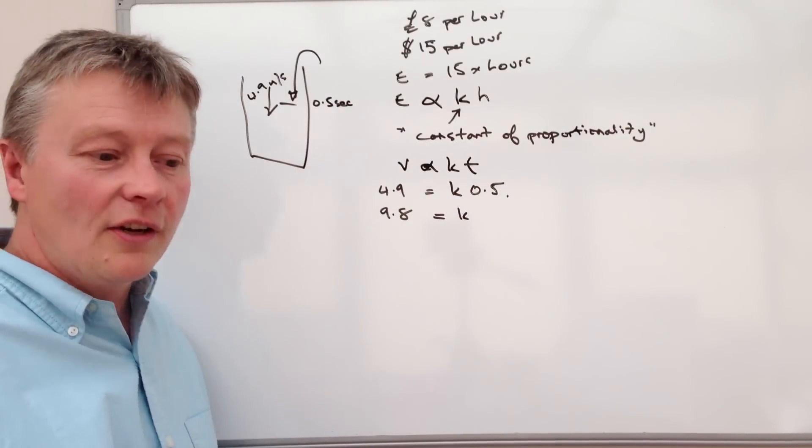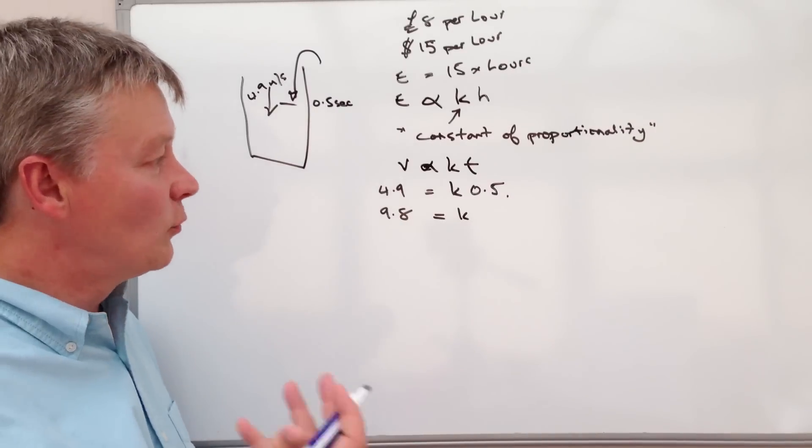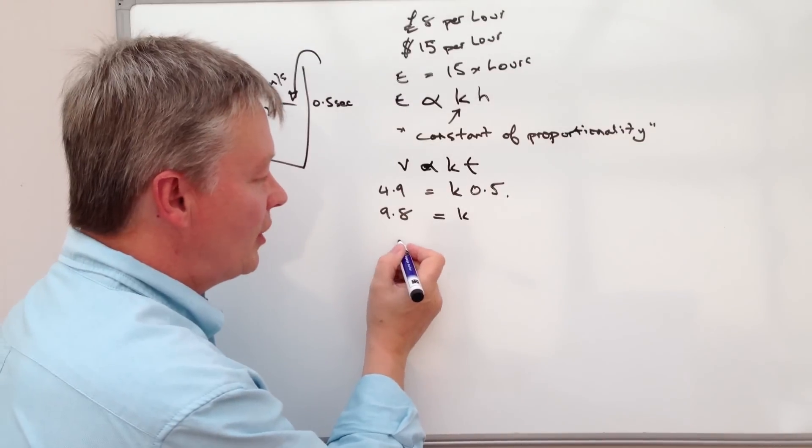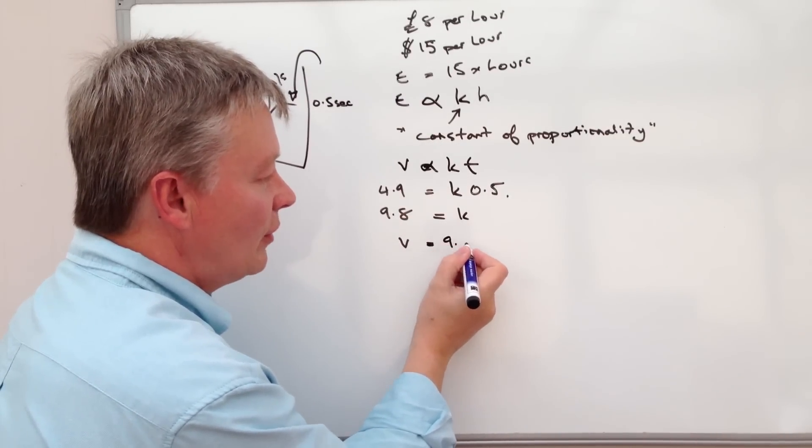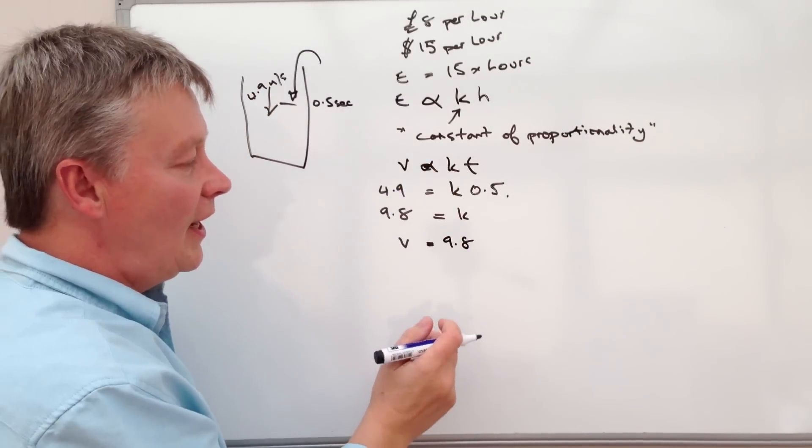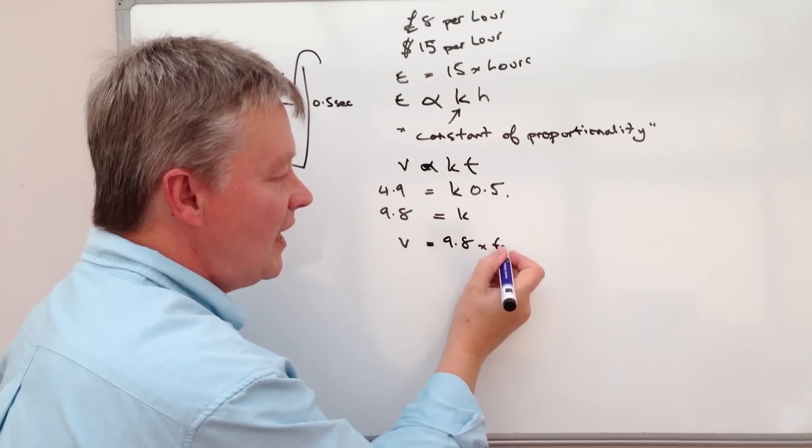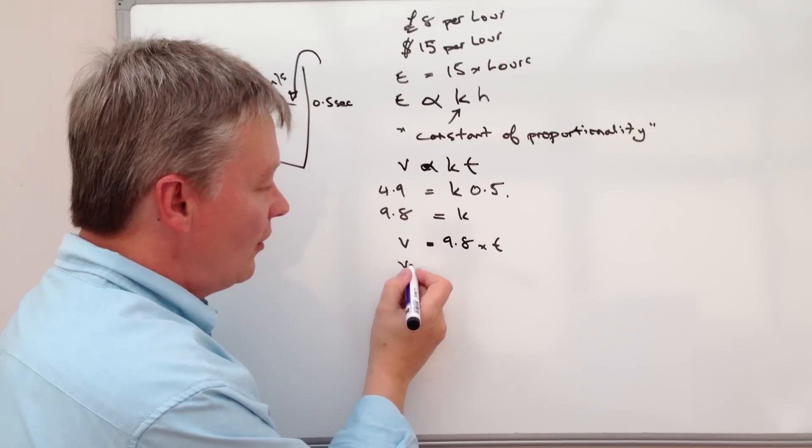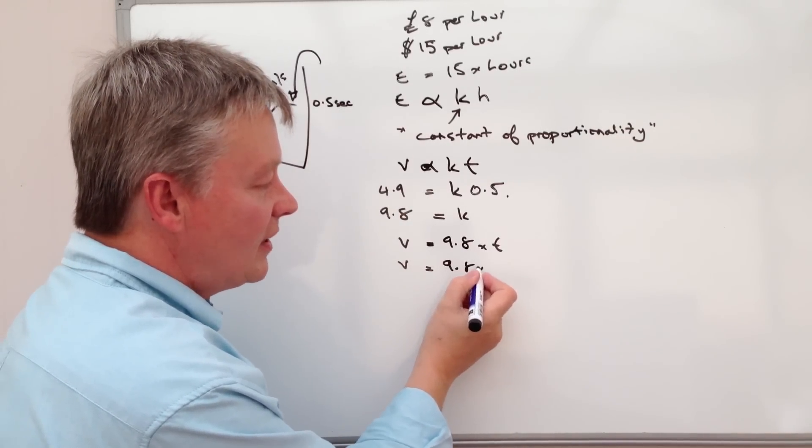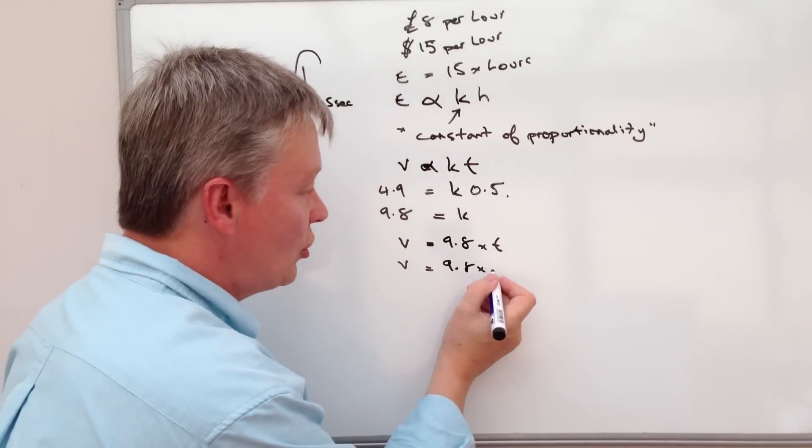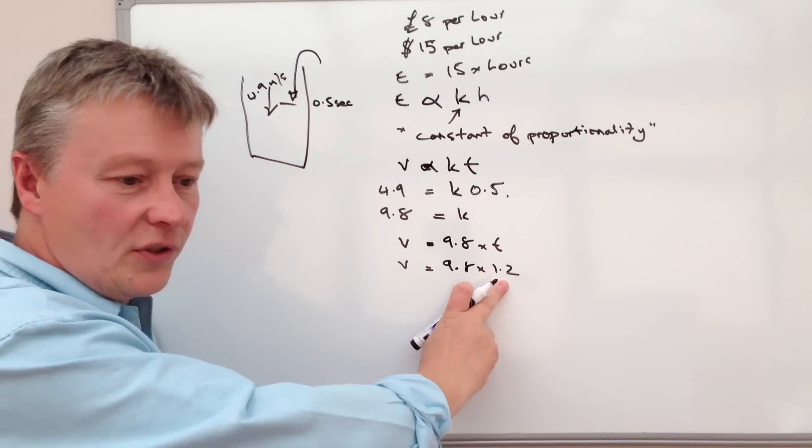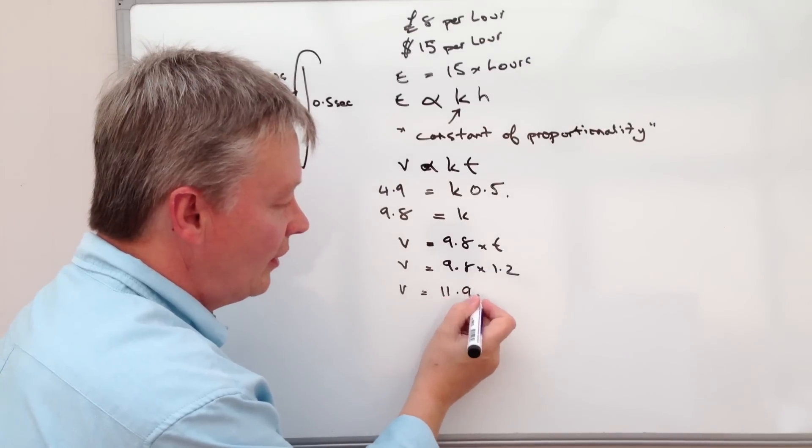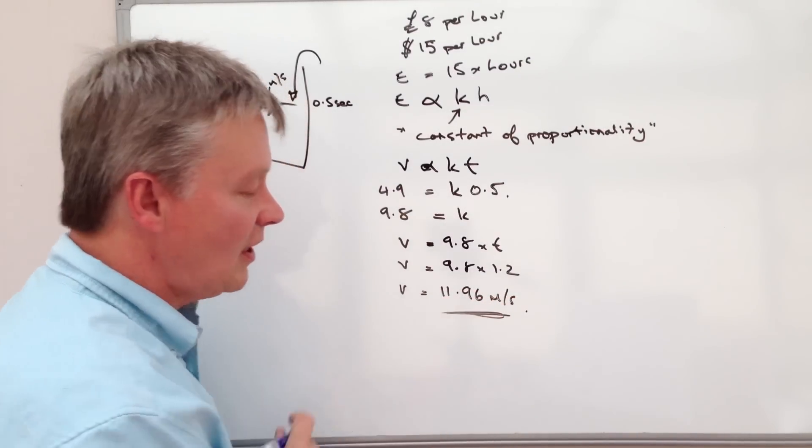And then the question goes on to ask you to calculate the speed after 1.2 seconds. So in other words, we've now got a formula which is V equals 9.8, which is the value of K, multiplied by T, which is the time. So in terms of the question, it would be V equals 9.8 times 1.2. So after 1.2 seconds, the velocity equals 11.96 metres per second.